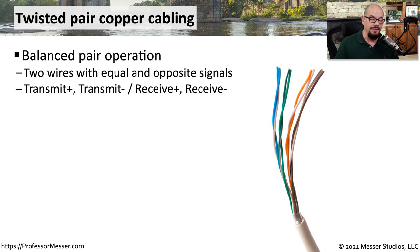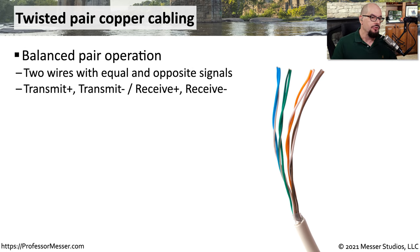If you were to look inside any of our twisted pair ethernet cables, you would see four pairs of wires, and you would see that the pairs are twisted around each other. These wires are sending equal and opposite signals down both sides of the wires. You'll sometimes see this referred to as transmit plus and transmit minus, or receive plus and receive minus.